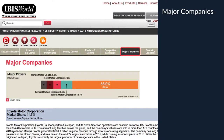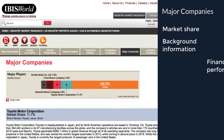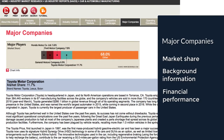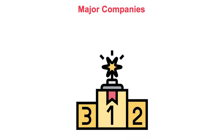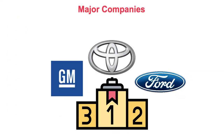Relating to Competitive Landscape, there's also the Major Company section, which informs all about the major businesses, including their market share, background information, and financial performance. Depending on the market, usually the three or four largest companies will be shown.